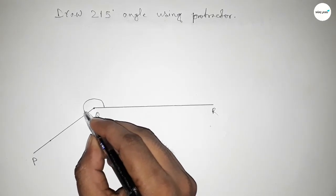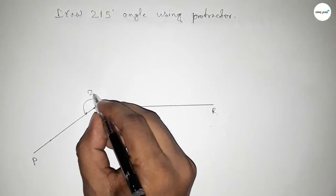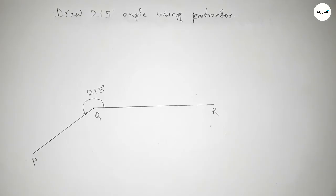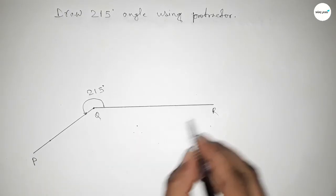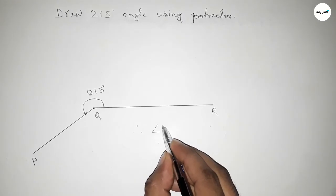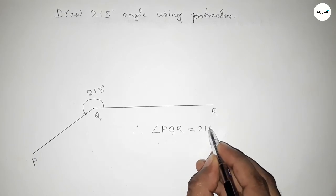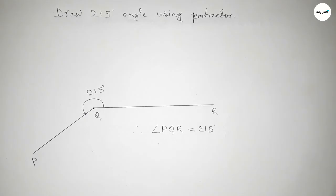So angle PQR, this is 215 degree. Therefore angle PQR equal to 215 degree. That's all.